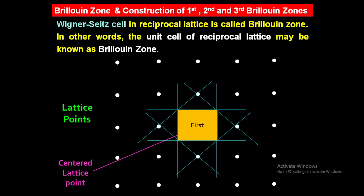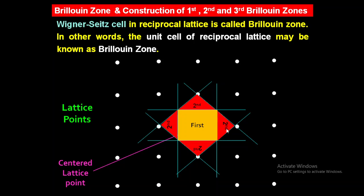The area enclosed between the first Bragg plane and the second Bragg plane is nothing but the second Brillouin zone. Moving from the first Bragg plane outward, these are the second Bragg planes. In every direction — upward, downward, left, right — the area between the first Bragg plane and the second Bragg plane is the second Brillouin zone. In the diagram, the first Brillouin zone is shown by the yellow portion and the second Brillouin zone is shown by the red portion. These are the steps to construct the first and second Brillouin zones.